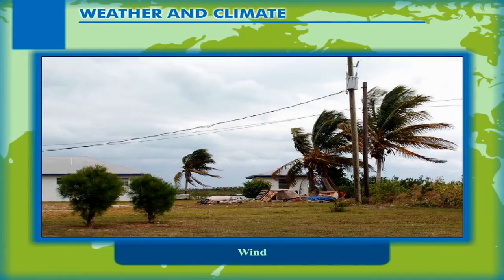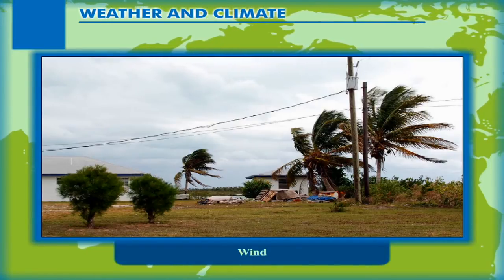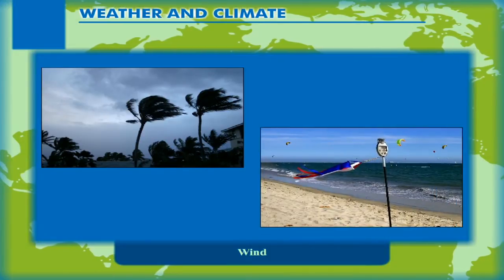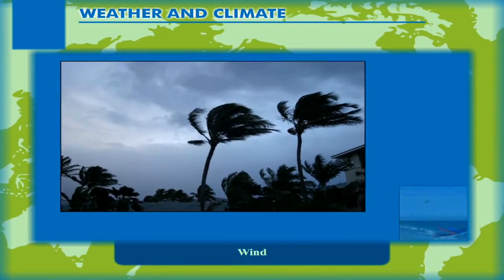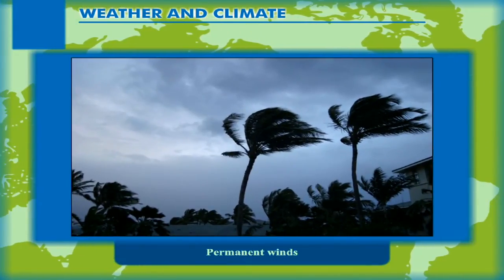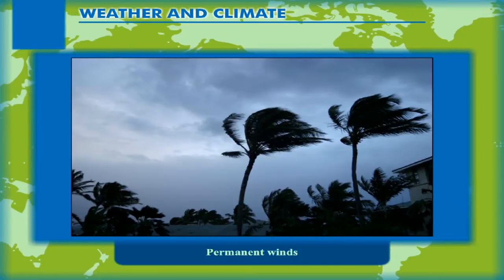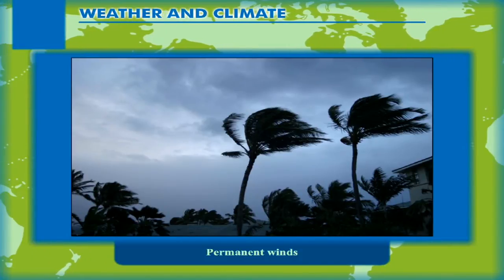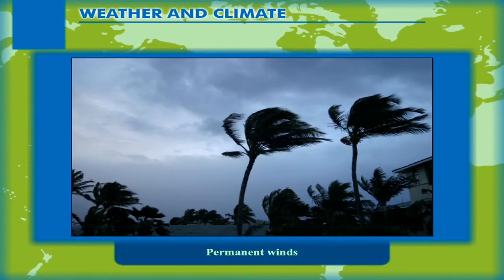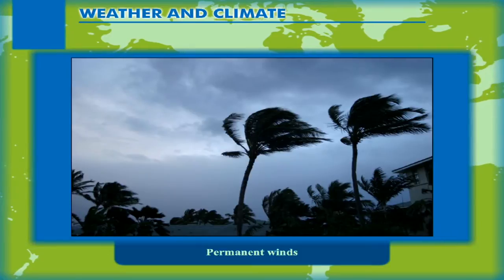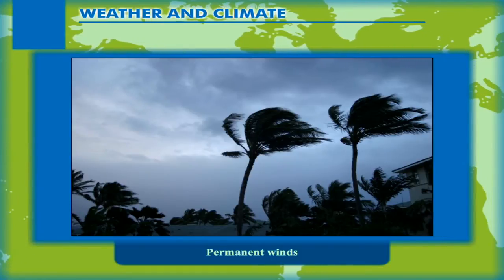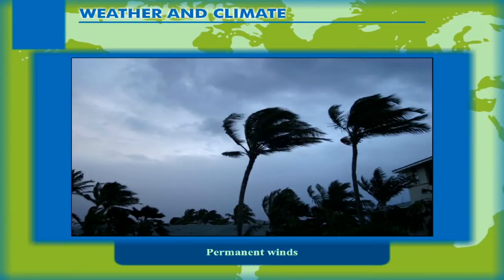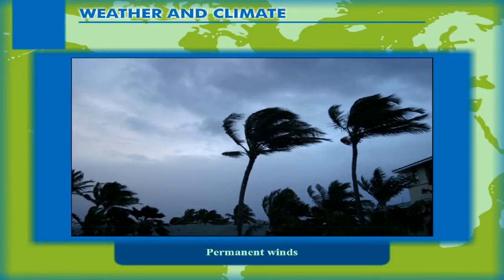Winds can be broadly classified as permanent winds and local winds. Permanent winds are the winds which flow throughout the year in a particular direction and over a particular region. They are also called prevailing winds or planetary winds.